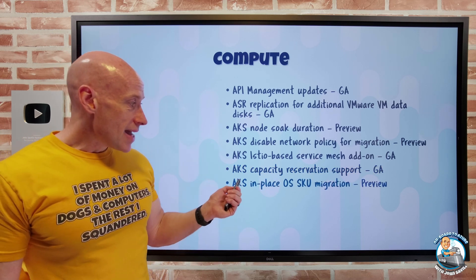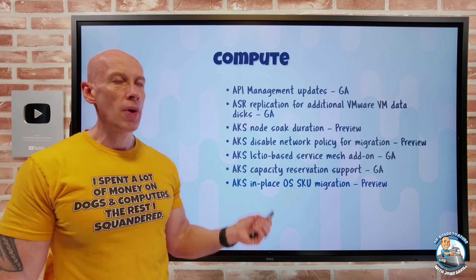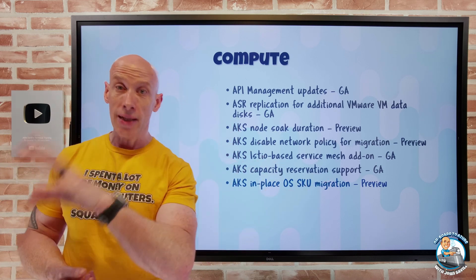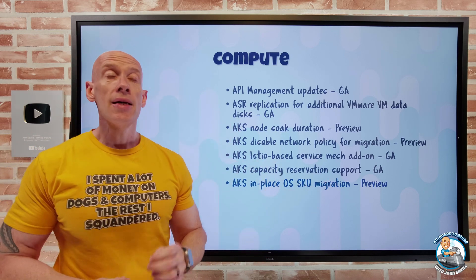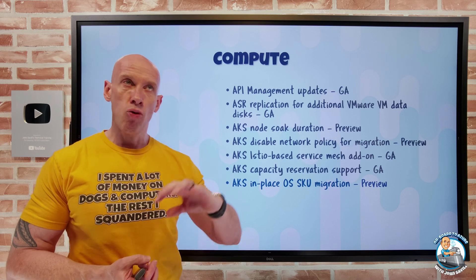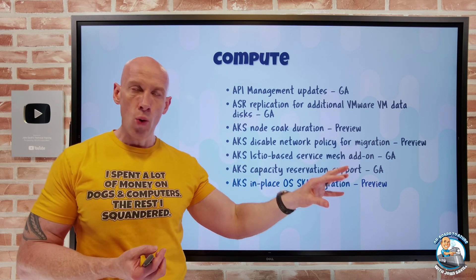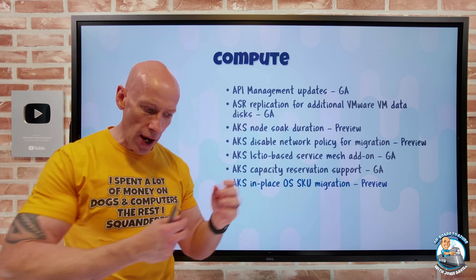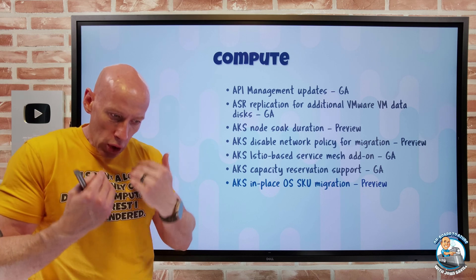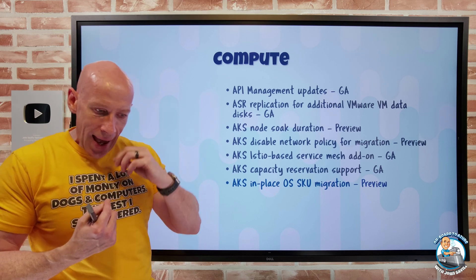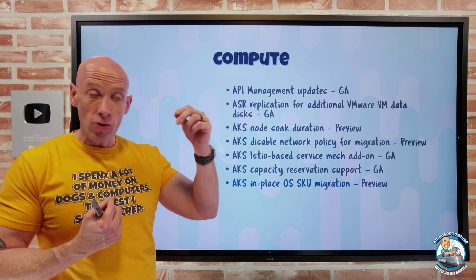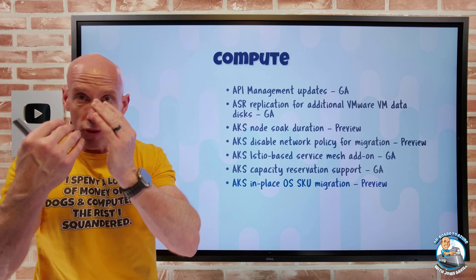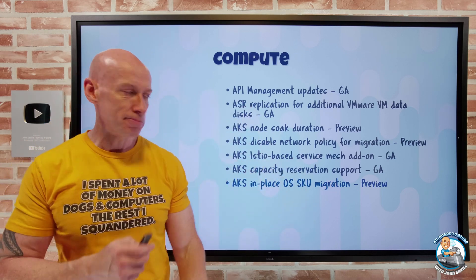AKS now has an in-place OS SKU migration. Think moving from Ubuntu to Azure Linux. Instead of having to create a brand new node pool for Azure Linux and then move your workloads over, you can now use the standard node image upgrade process to move from Ubuntu to Azure Linux in place.